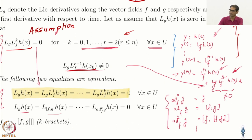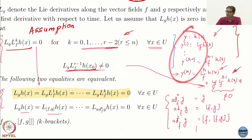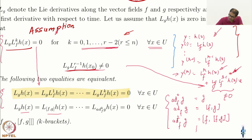The whole purpose here is: I took this output y — just like in the pendulum case where I took the output as the x₁ state or the angle — I took some output, I got this r+1 state equations, and in this equation I have the control. And this term is non-zero, so I can use it.